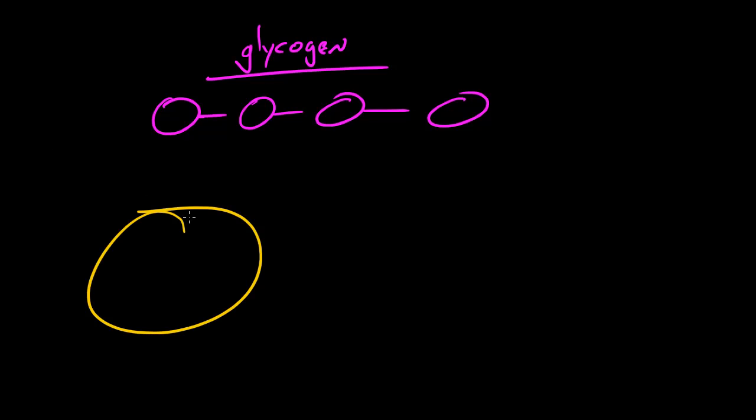So then whenever your cells need energy later on, like okay now I need energy again because maybe Bucky's exercising, walking his dog, we're going to need some energy here. What it does is it breaks down this glycogen into individual glucose molecules and that way it could break it up and use the glucose as energy.